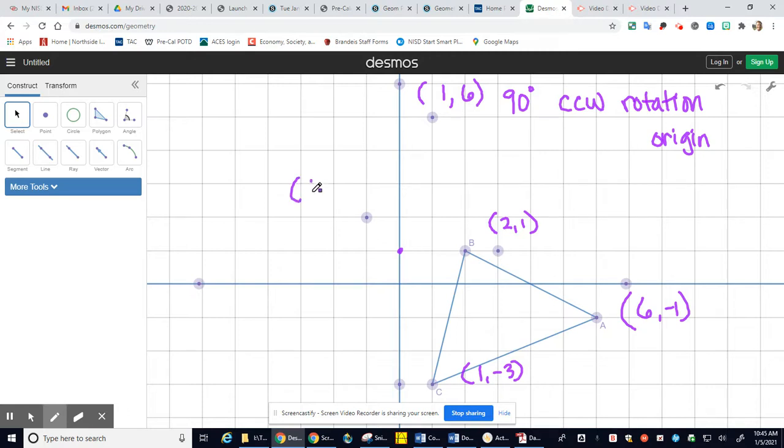And then B, they switch positions - your X and your Y change positions, but then the X becomes negative. So (-1, 2) ends up there. And C, they switch positions, so (-3, 1) and (1, -3) switch positions, and then the X becomes negative. So you take away the negative if it's already a negative.